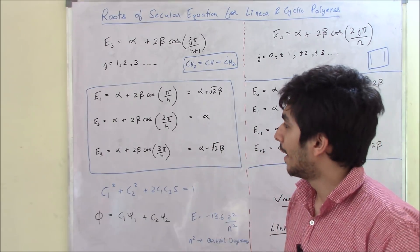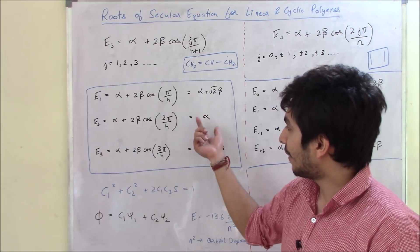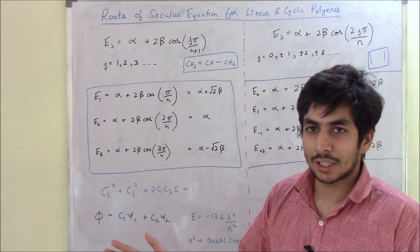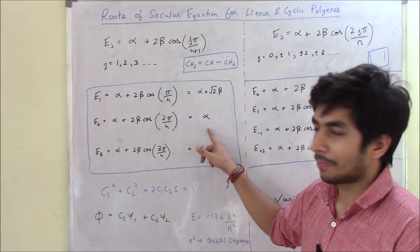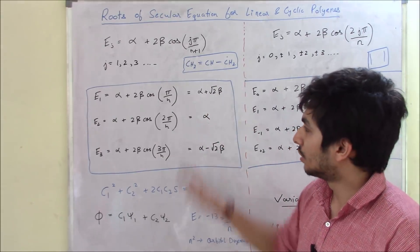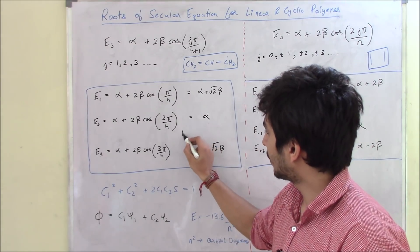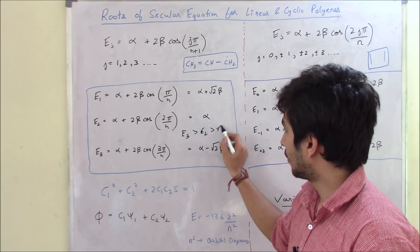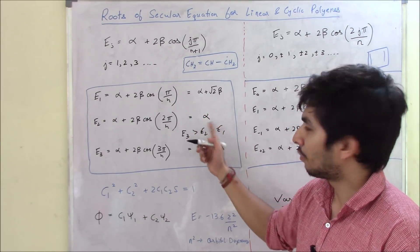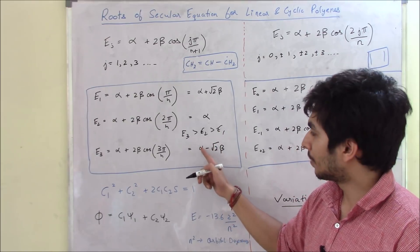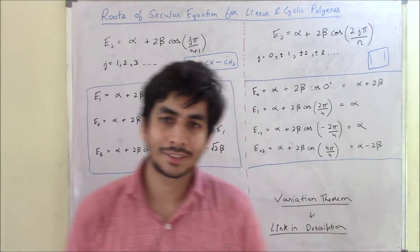To arrange these roots by energy: since alpha and beta are both negative, for E3 = alpha − √2·beta, the minus of a negative beta makes it plus, so E3 = alpha + √2·beta becomes the highest energy level. E2 = alpha is intermediate, and E1 = alpha + √2·beta — wait, with both terms negative — is actually the lowest energy. So the order from highest to lowest energy is E3, E2, E1.